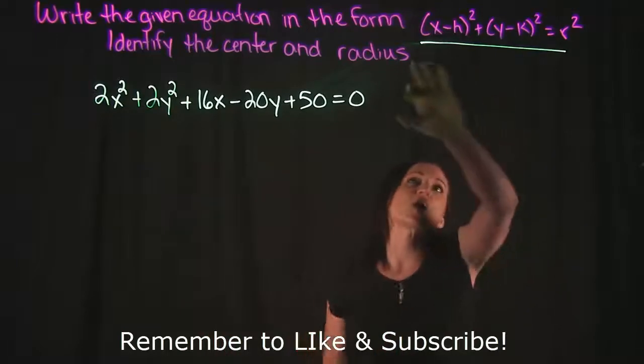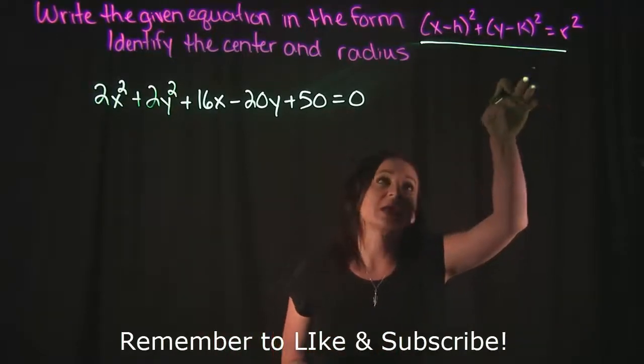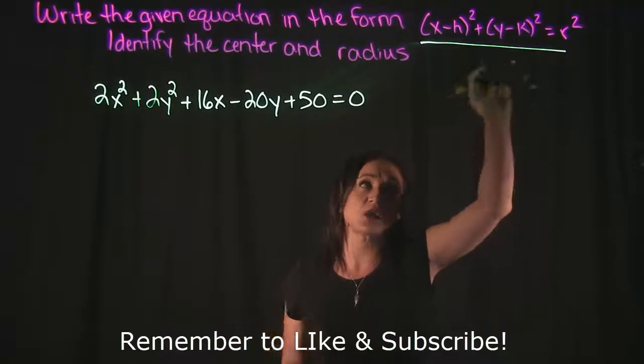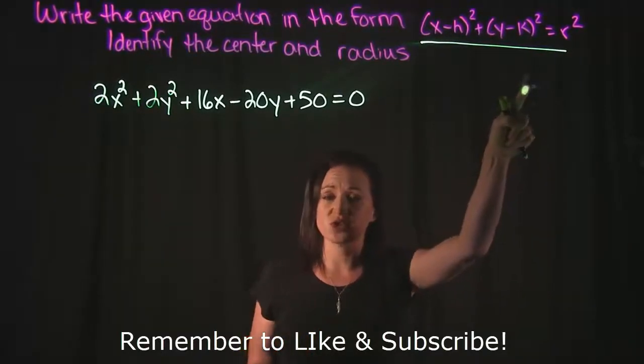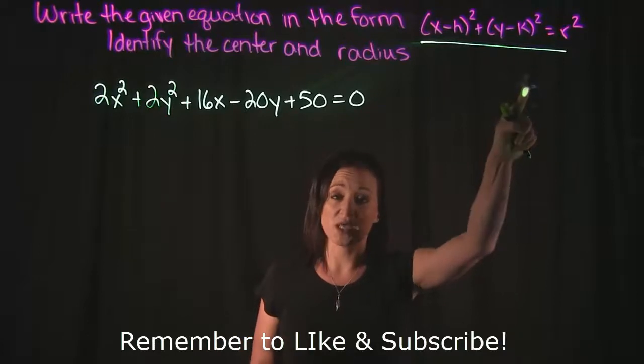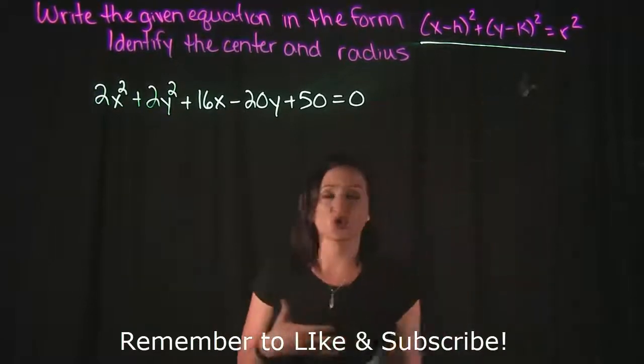Now, we like our circle to be in this form here, because as long as our equation of the circle was in this form, we know exactly what the center of the circle is, and we also know what the radius is. So this is the preferred form for a circle.